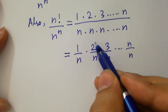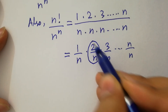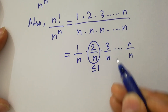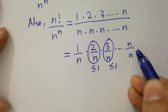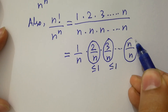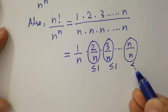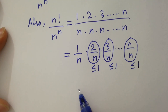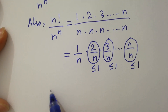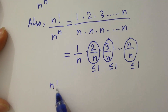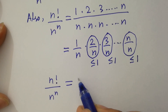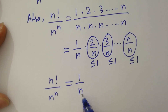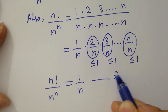Since 2/n is less than or equal to 1, and 3/n is less than or equal to 1, then n/n is also less than or equal to 1. So n factorial over n to the power n will be less than or equal to 1/n. Let's call this the second equation.